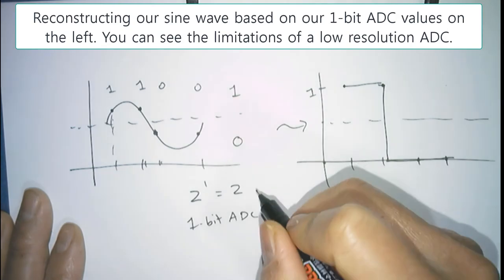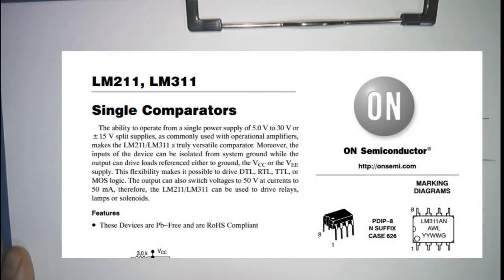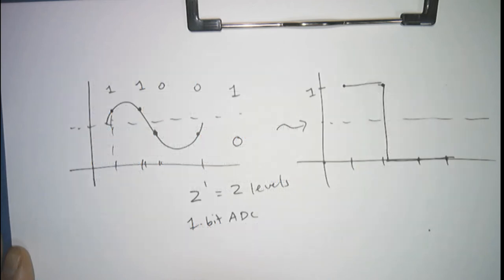1-bit ADCs actually exist, and they're called comparators. What they do is they compare a voltage, and if it's above a threshold voltage, it outputs a 1. And if it's below a threshold voltage, it outputs a 0.